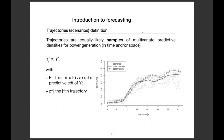Last but not least, there are scenarios or trajectories — equally likely samples of a multivariate predictive density for power generation in time or space. Each trajectory represents a possible realization of the random process. At time t, you sample several trajectories, and you can use these multiple samples for decision making.